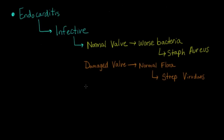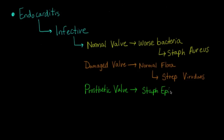Because they become bacteremic — they have these bacteria in their blood after their teeth and mouth have been manipulated. The last type is when someone has a prosthetic valve — has had a valve replacement in the past. These are characteristically caused by Staph epidermidis, or Staph epi.